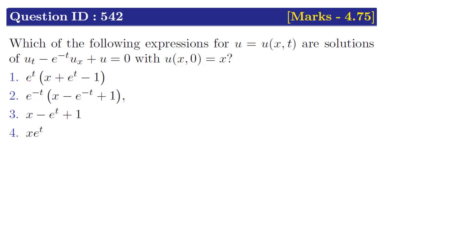Option 1: e^t · (x + e^t − 1). Option 2: e^(−t) · (x − e^(−t) + 1). Option 3: x − e^t + 1. Option 4: x · e^t.